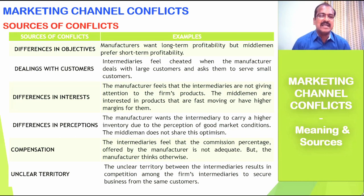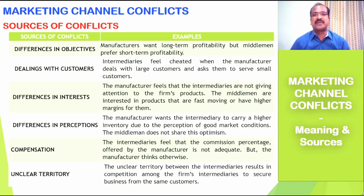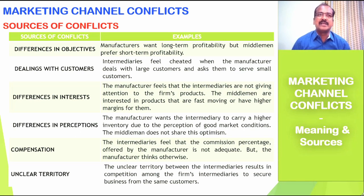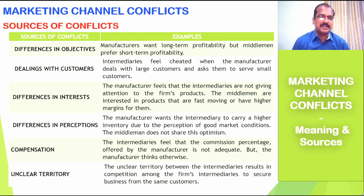The second source of conflict is dealings with customers. The intermediaries feel that they are cheated by the manufacturers because the manufacturers want to serve a large group of customers in a small territory. This perception of the intermediaries is the second source of conflict.